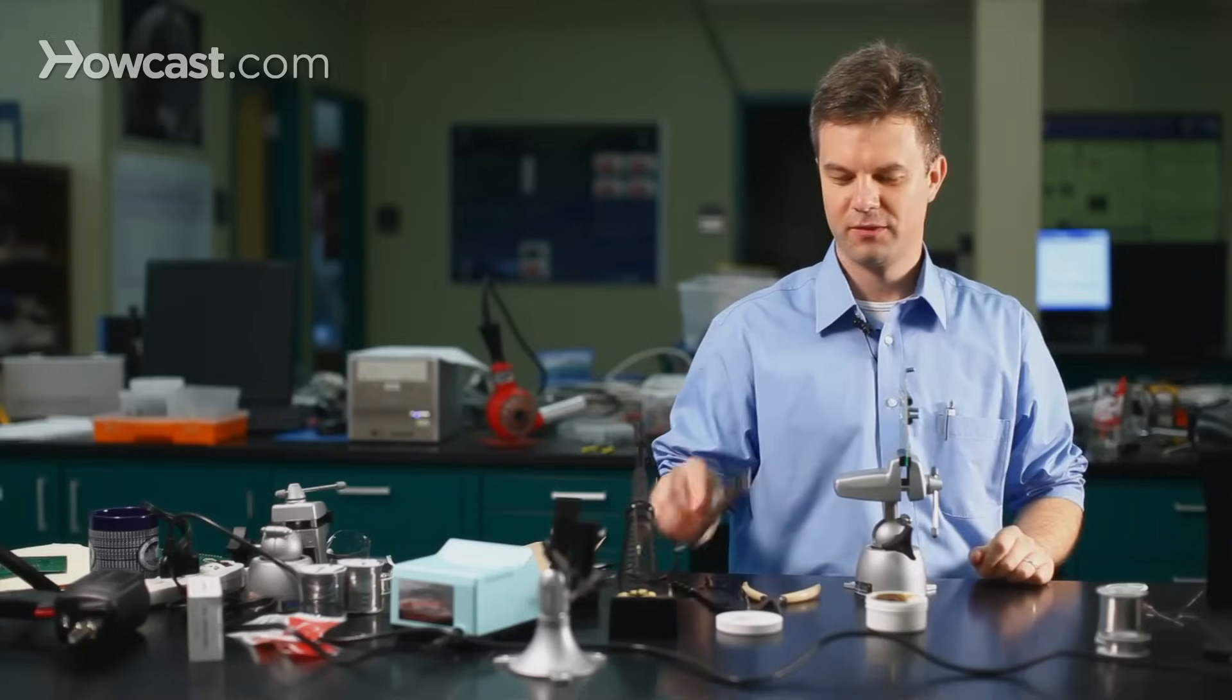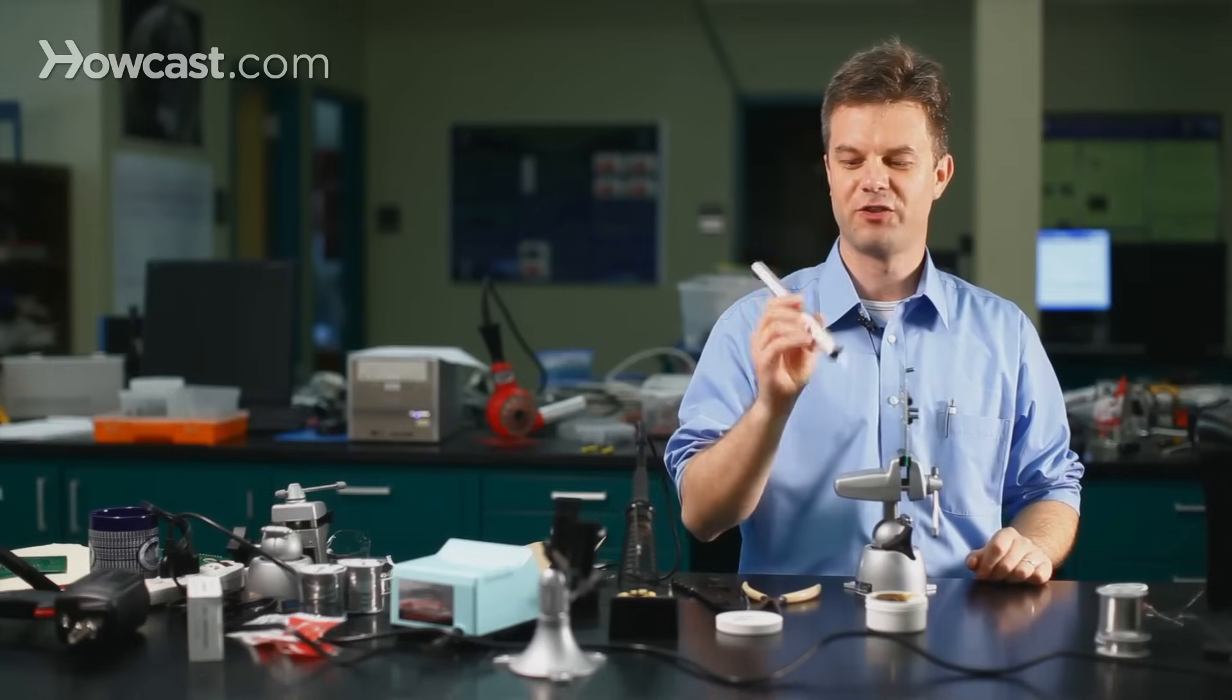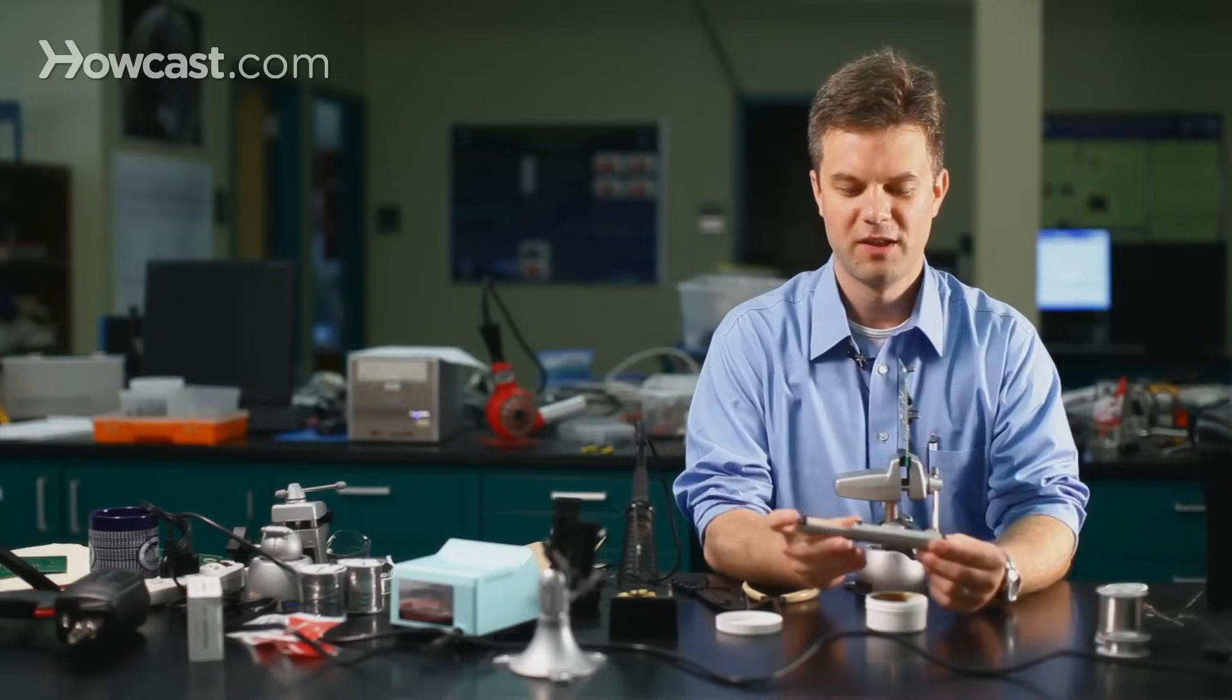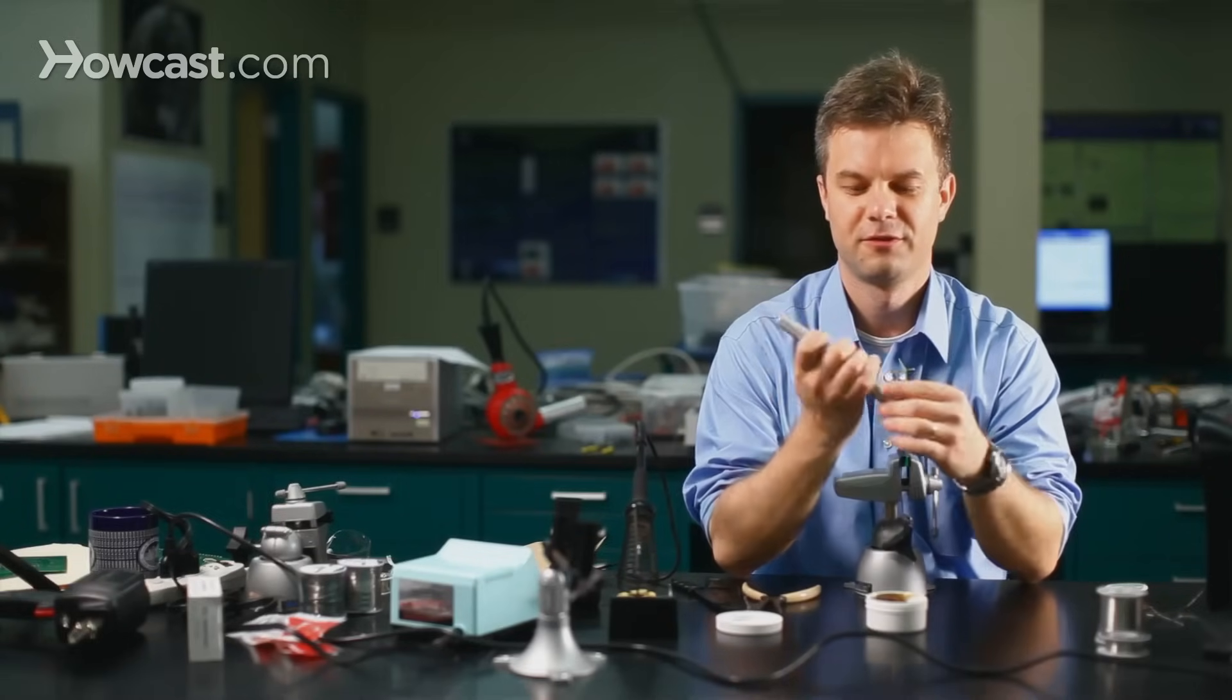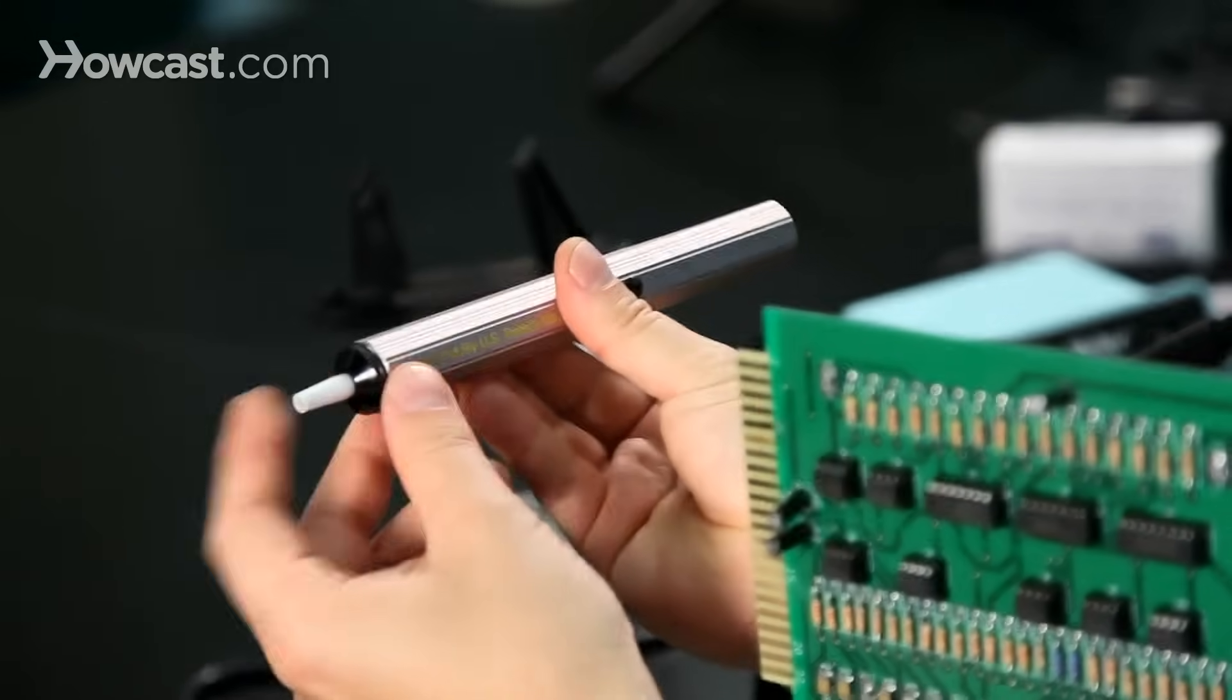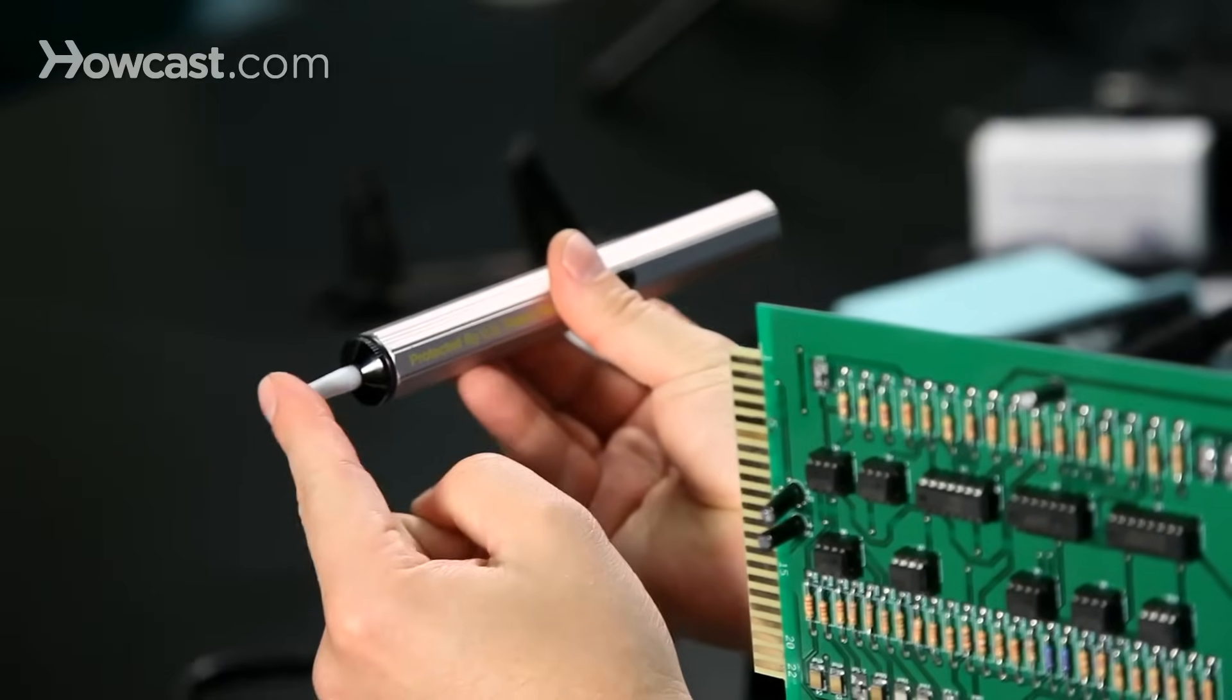And what we'll use is a solder sucker. The solder sucker is basically a vacuum tool with a plunger that provides a vacuum that we can use to suck the solder inside through the tip.